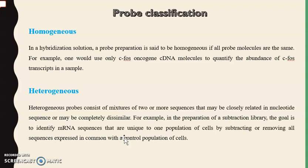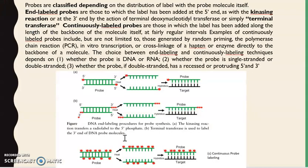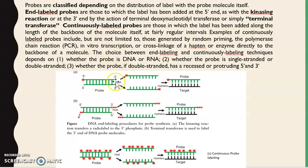One more classification of probes is on the basis of the procedure used to label them — they may be end-labeled probes or continuously labeled probes. End labeling can be done at the 5-prime end or 3-prime end. To label the 5-prime end, generally the kinase reaction is used, in which the gamma phosphate from ATP is transferred to the 5-prime end to attach any label molecule.